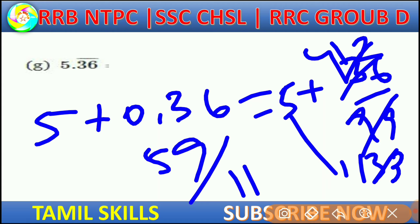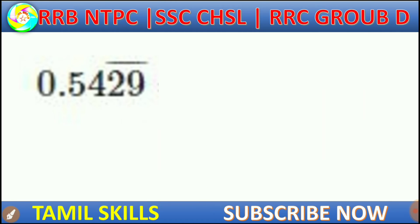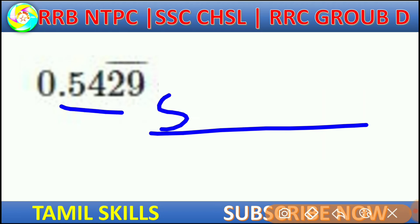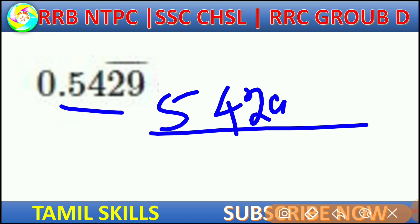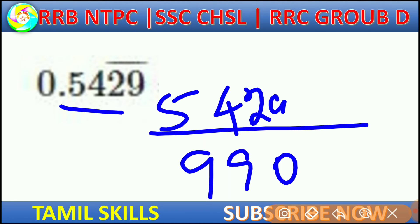OK guys, so if you use this bar notation, it's only about the repeating point value. Now we will see how to use this when the bar does not start from the first digit — for example, 0.5429 bar. The denominator becomes 9900 minus 54, giving 29 by 9900.